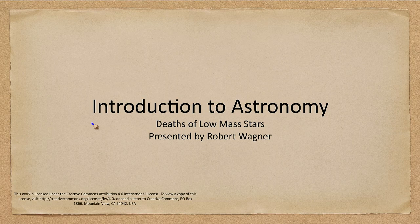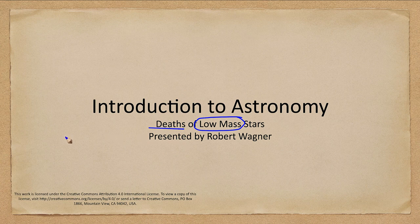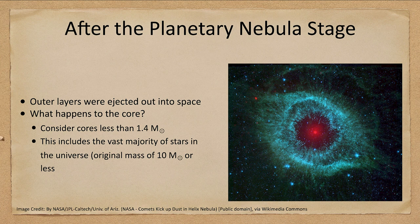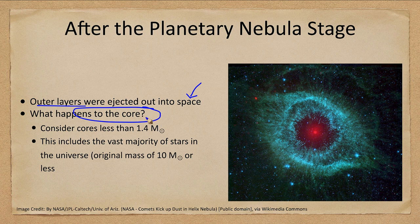Greetings and welcome to the introduction to astronomy. In this video we are going to begin talking about the deaths of stars, looking specifically at low-mass stars. What happens to stars like our Sun at the end of their lives? We looked at them previously and they had formed things like a planetary nebula, so we knew that the outer layers were ejected out into space. Here we see an example of one of those, but the question is: what happens to the core?